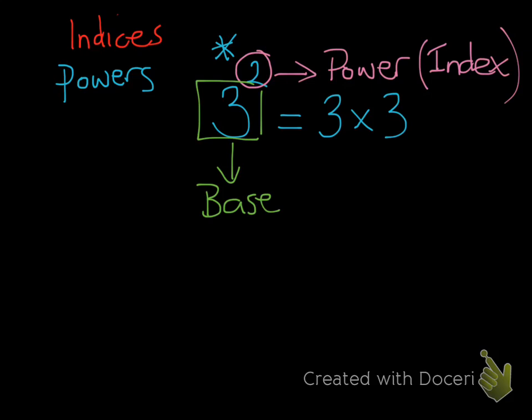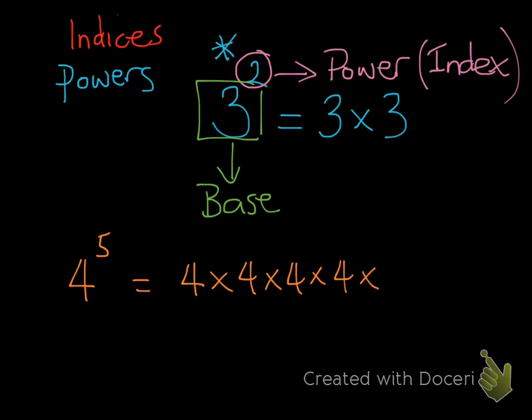So if I give you another example of a power, I'll give you 4 to the power of 5. The index here is 5, or the power is 5, and the base number is 4. So this just means that we have the value 4 multiplied by itself 5 times — so 4 times 4 times 4 times 4 times 4.